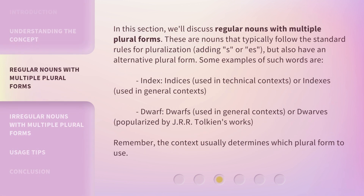In this section, we'll discuss regular nouns with multiple plural forms. These are nouns that typically follow the standard rules for pluralization, adding -s or -es, but also have an alternative plural form. Some examples of such words are: 'index' — 'indices', used in technical contexts, or 'indexes', used in general contexts. 'Dwarf' — 'dwarfs', used in general contexts, or 'dwarves', popularized by J.R.R. Tolkien's works. Remember, the context usually determines which plural form to use.